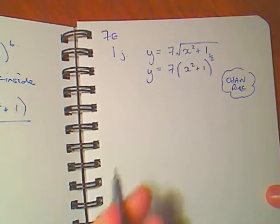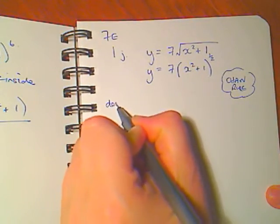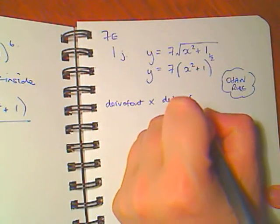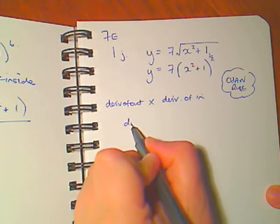So I'm going to do it the short way which is to say the rhyme which is the derivative of the outside times the derivative of the inside. And I say it as I do it.